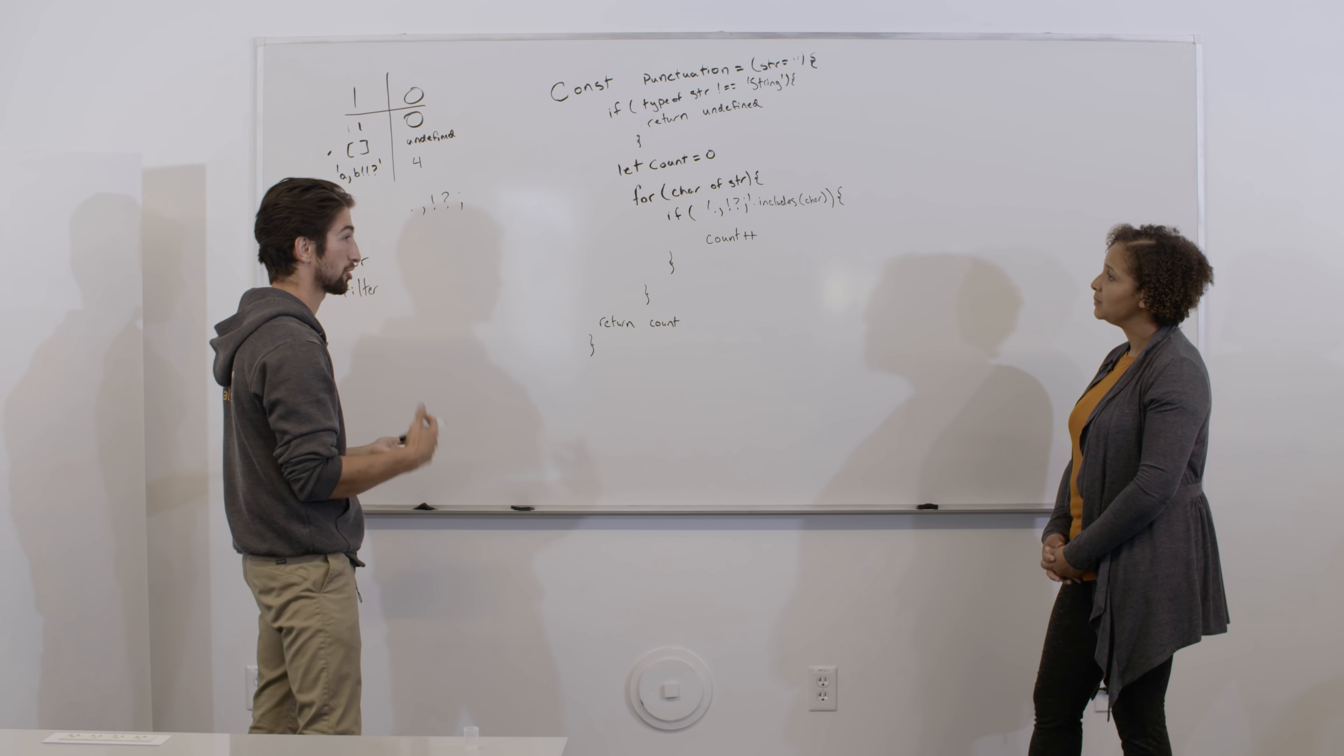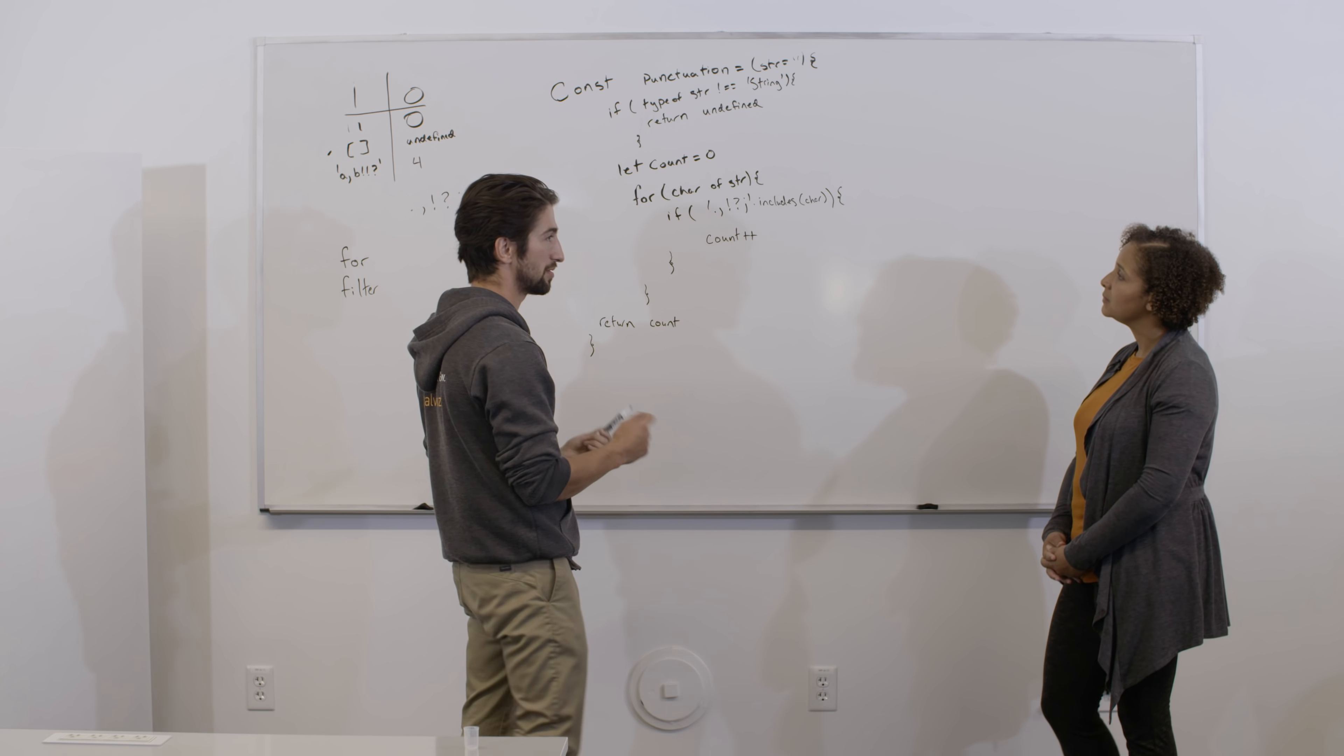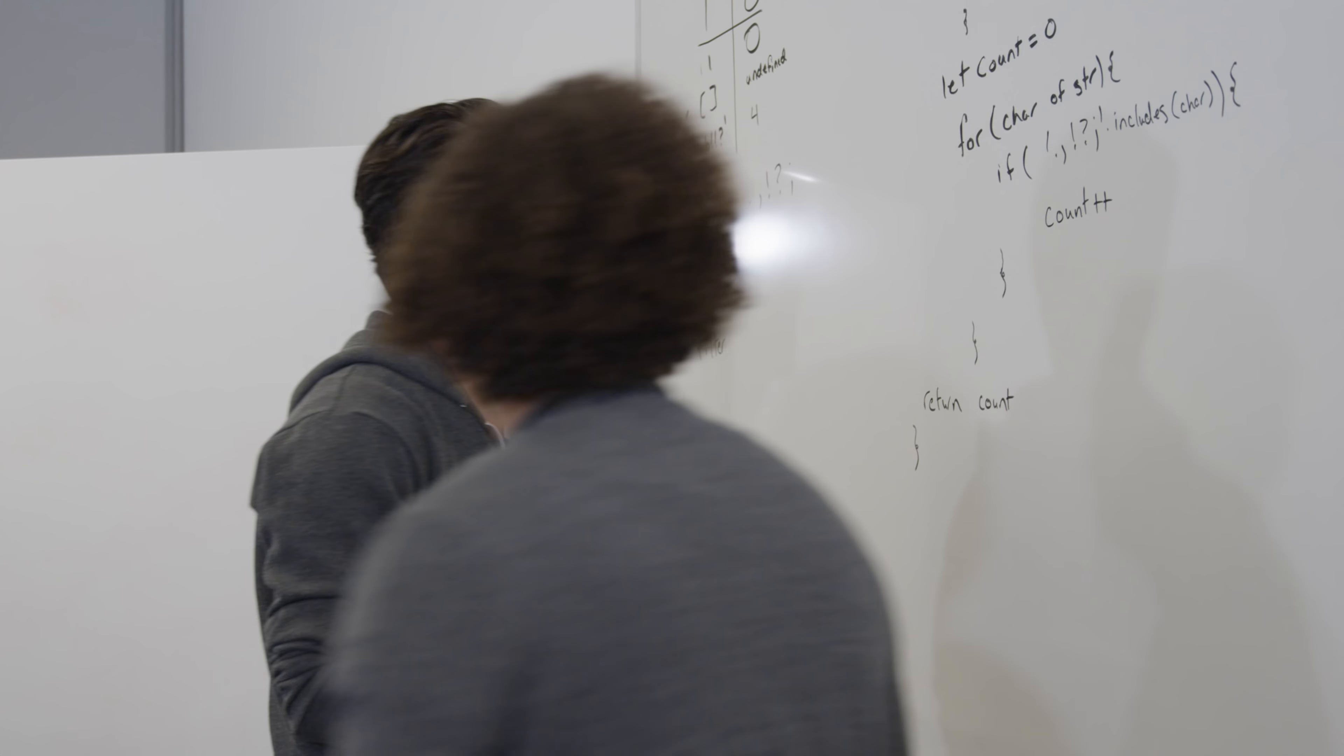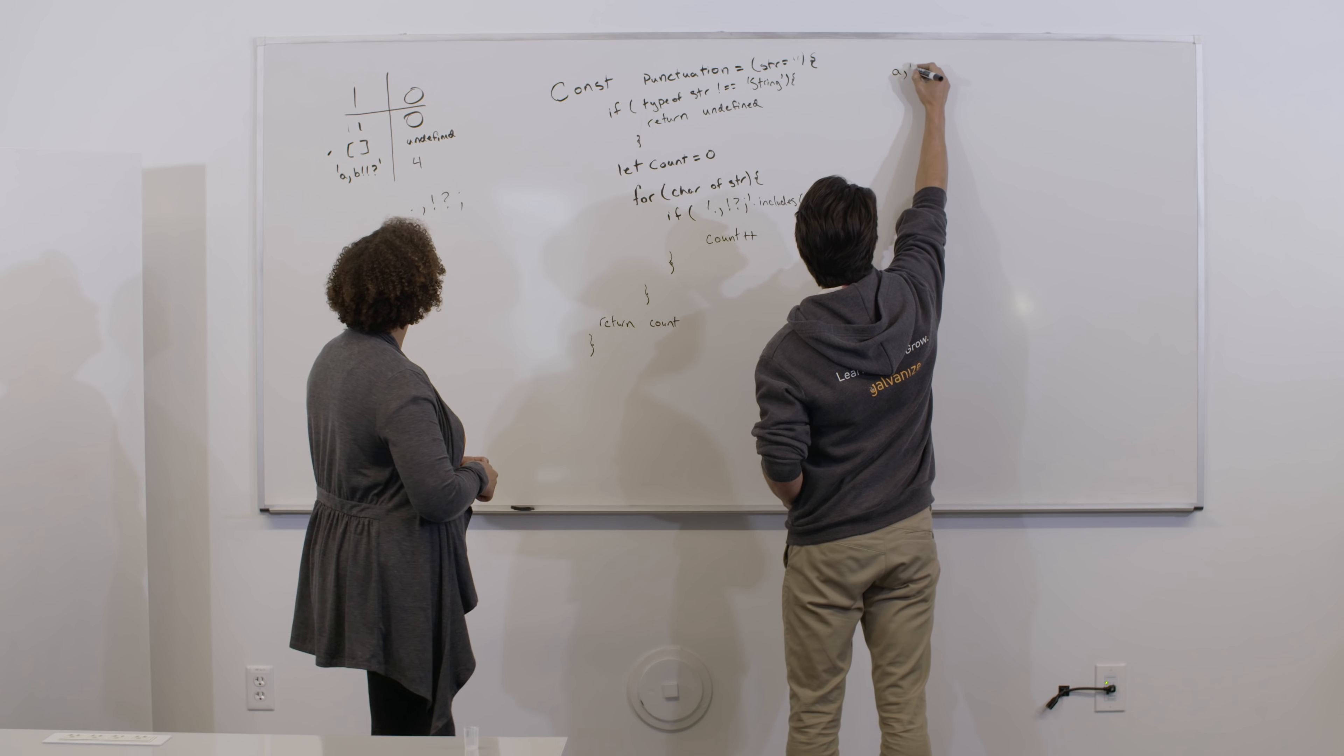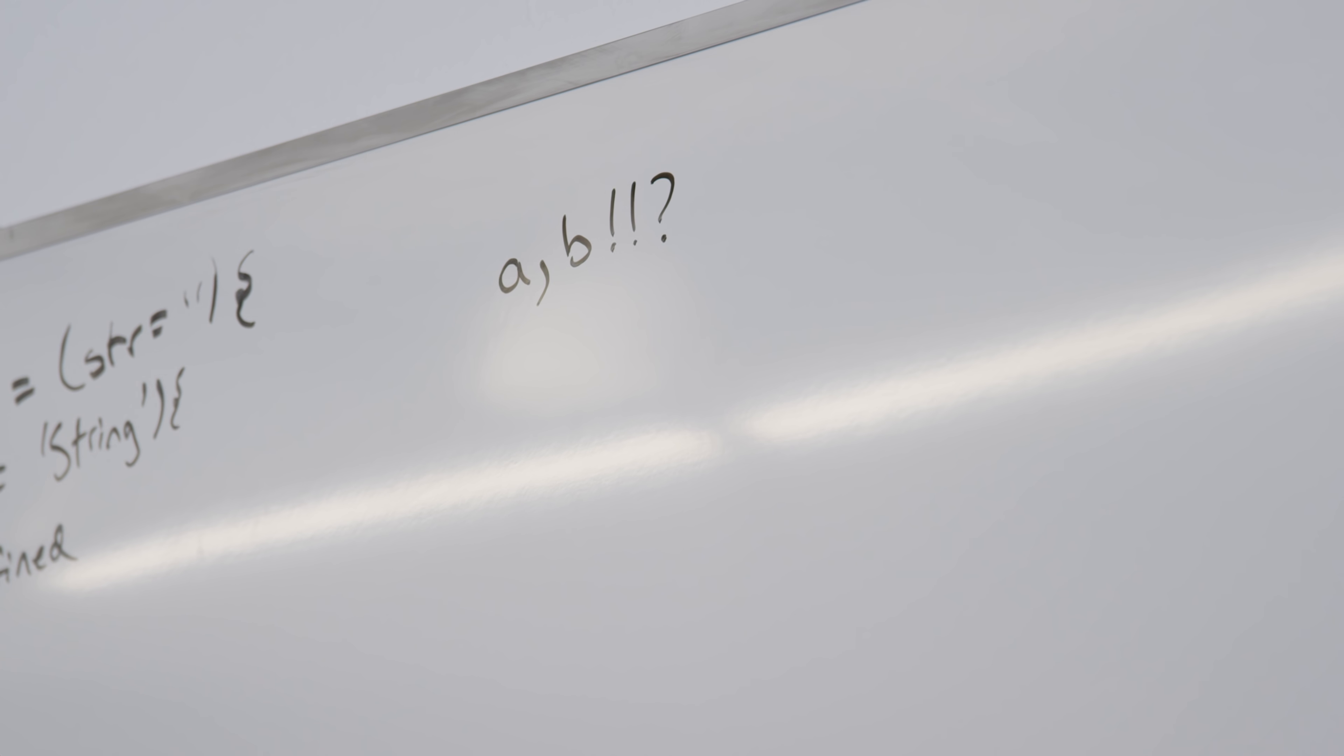The next step that I take in solving this problem is taking my edge case and stepping through the problem to make sure that I'm actually getting the value that I expect from it. And that will also help me find any little errors I might have had in syntax and writing. So I'll move over to this side. And I'm going to plug in this value here. And that's a comma, b exclamation, exclamation, question mark.